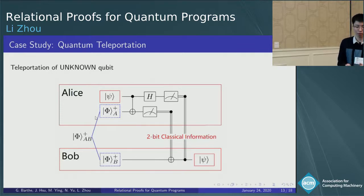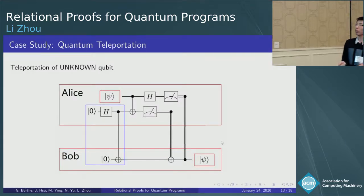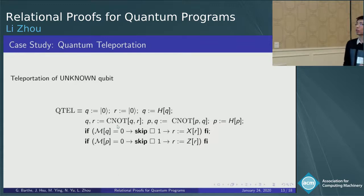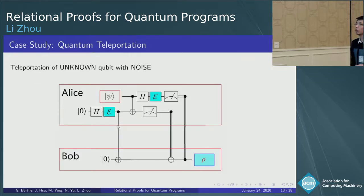On the other hand, after receiving two-bit classical information, Bob applies the corresponding unitary transformation, and surprisingly, the unknown state is recovered at the end. The circuit in the blue box is used to produce the EPR state. Of course, we can use our quantum while language to write this program like this.